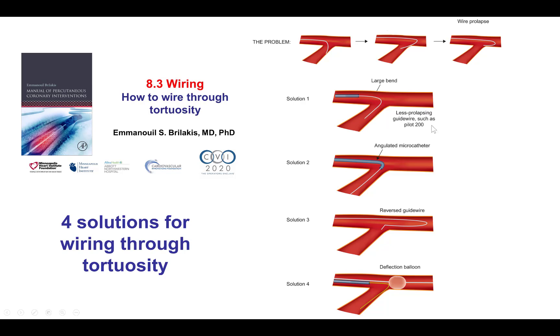Some guide wires, like the Pilot 200, have less tendency to prolapse. Another option is to use an angulated microcatheter, such as the Venture or the SuperCross 120.